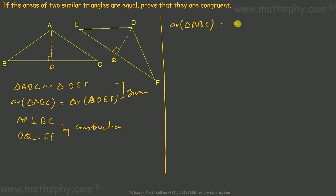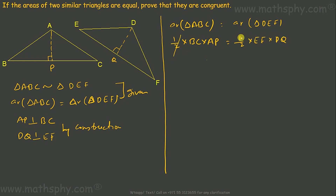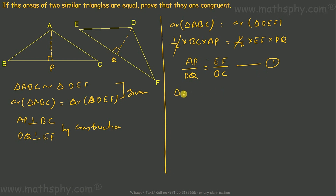The area of triangle ABC equals half times BC times AP, and the area of triangle DEF equals half times EF times DQ. Since the areas are equal, the halves cancel, giving us AP over DQ equals EF over BC. This is equation number one.